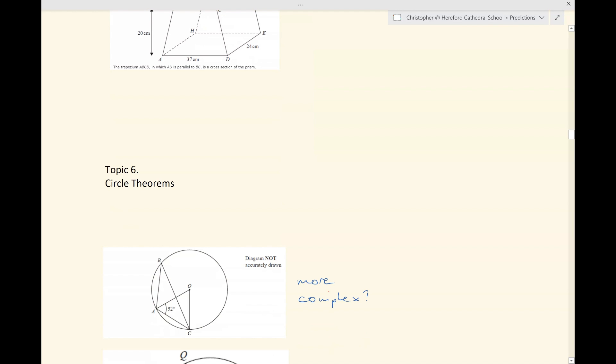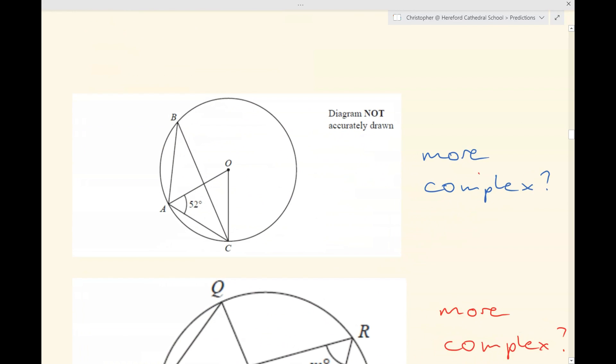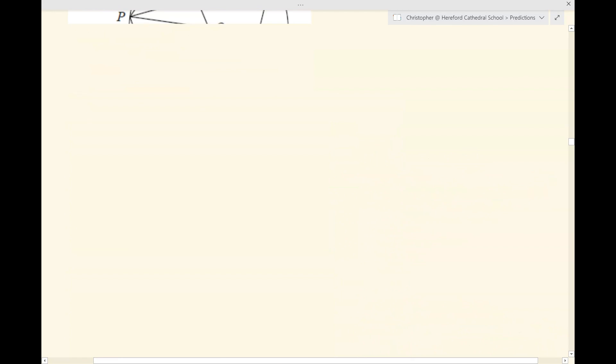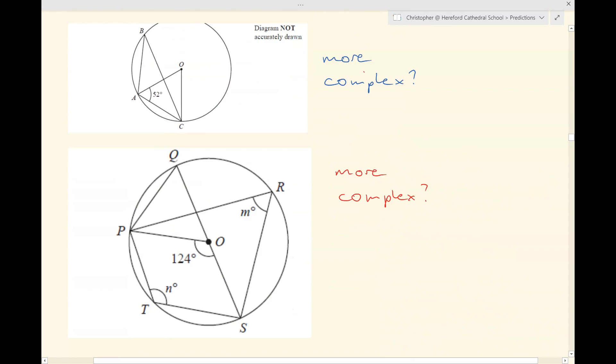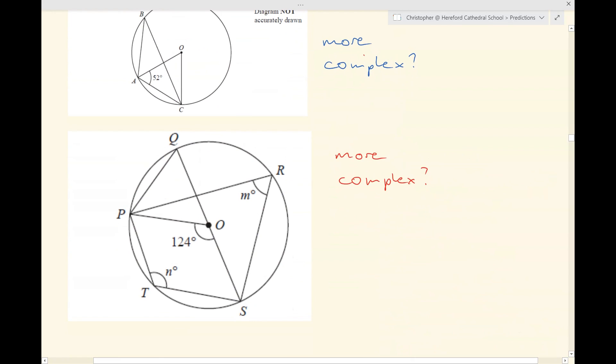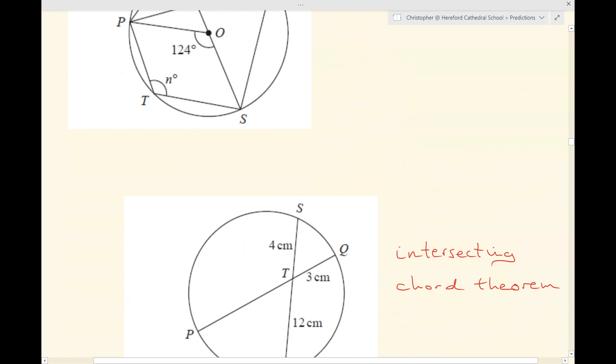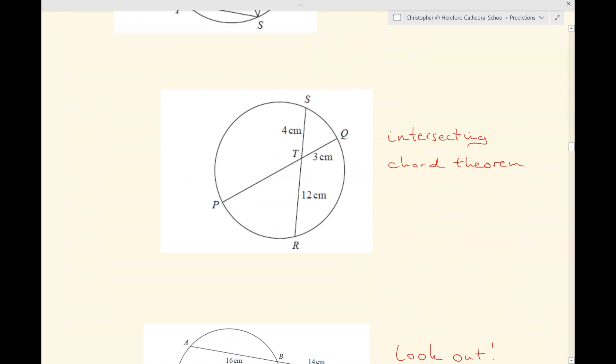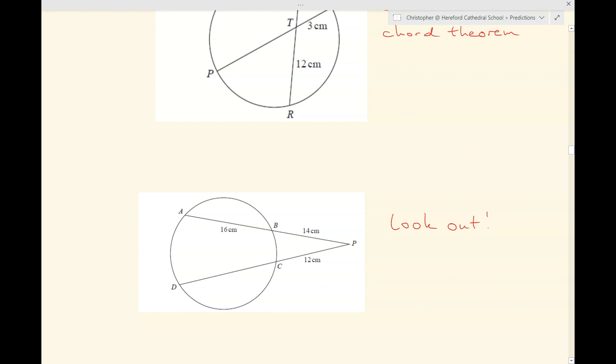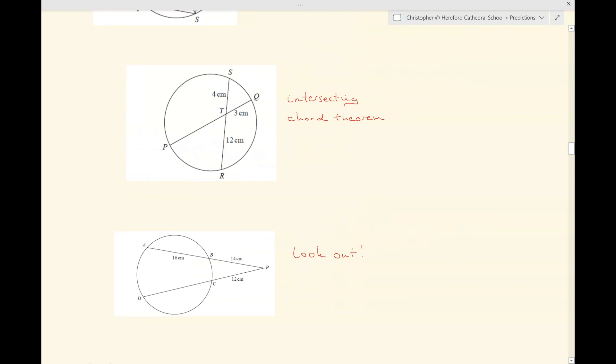We've already had the cosine rule and the sine rule. We haven't had any circle theorems yet. Here's a relatively straightforward example of a question involving circle theorems. And here's a slightly more complex example. Don't forget, you could be asked about the intersecting chord theorem. And also, look out, the chords might intersect at a point outside of the circle. I'll put a film covering each of these topics in my Getting Ready for Paper 2H playlist. And I'll certainly be sure to include some intersecting chord theorem examples in the circles film.